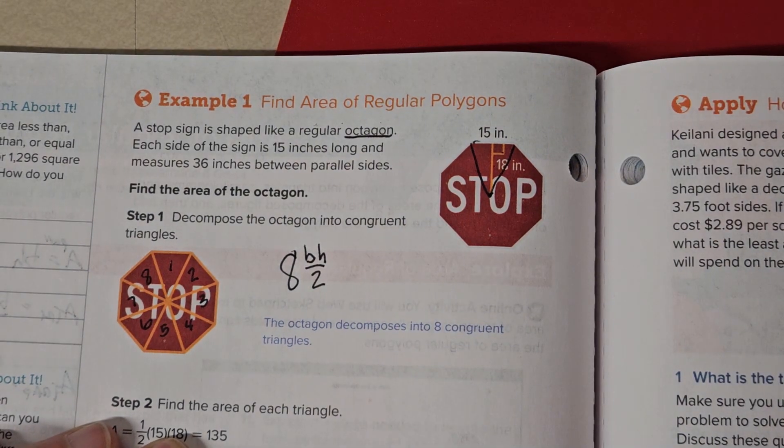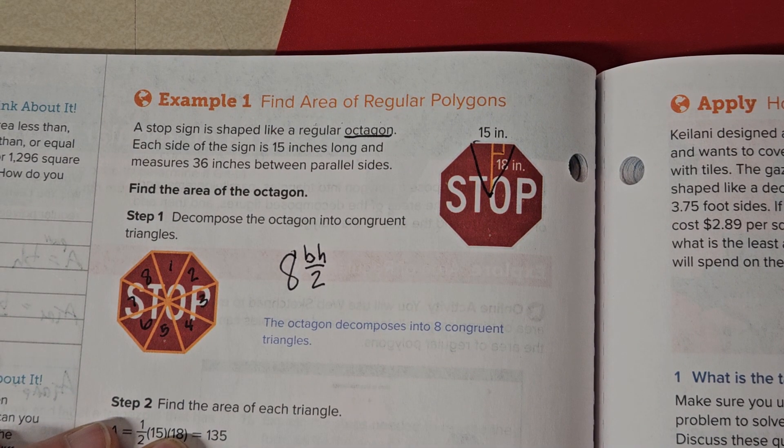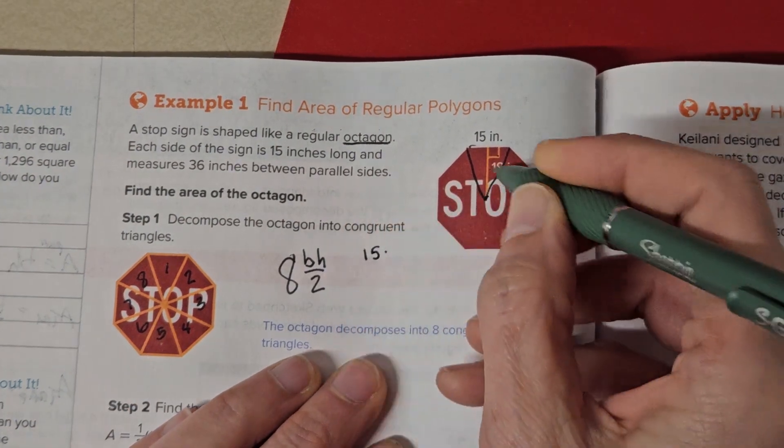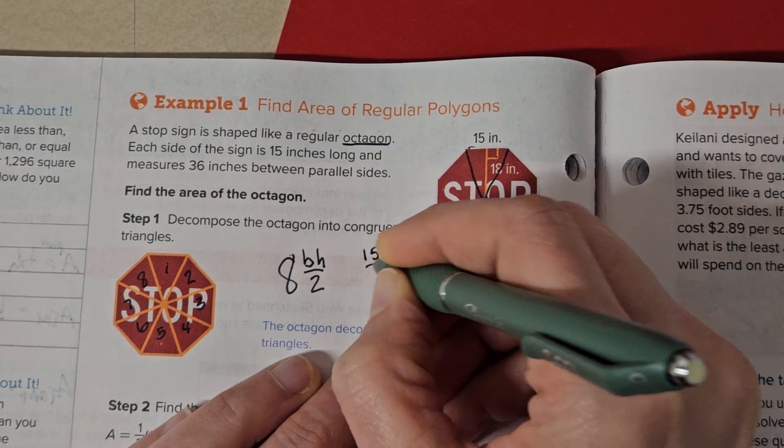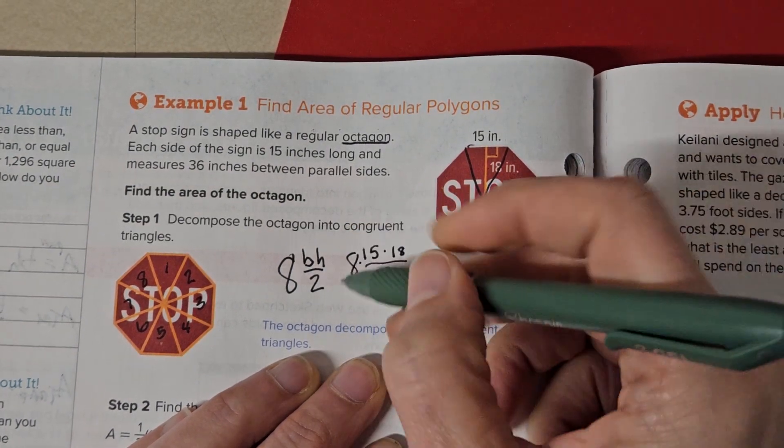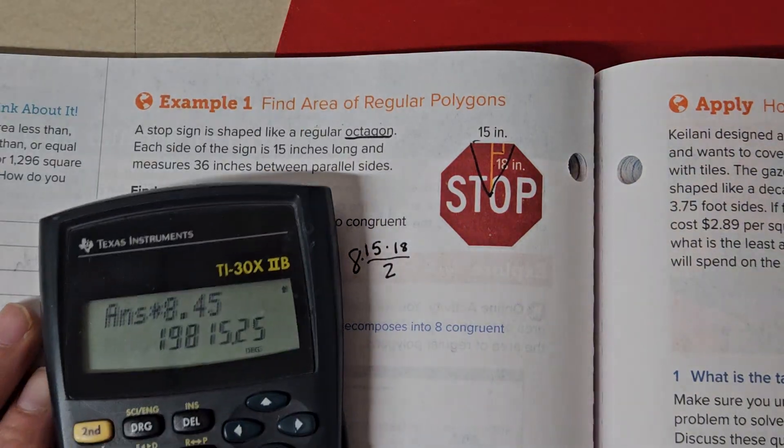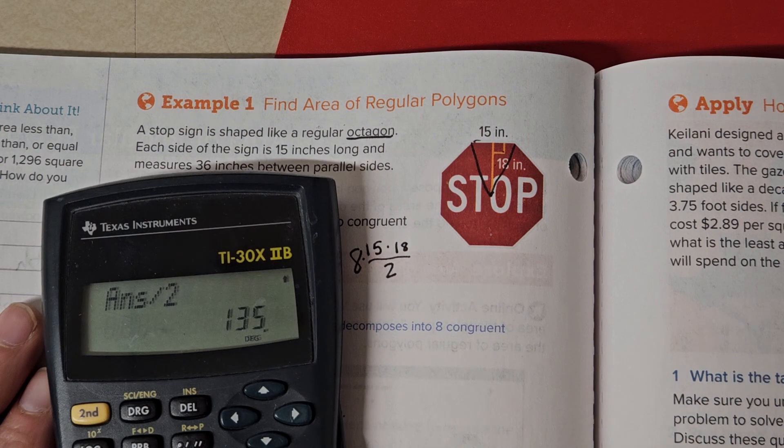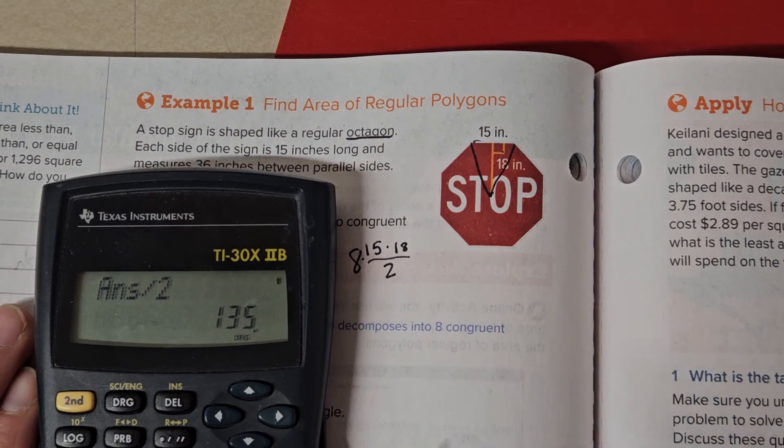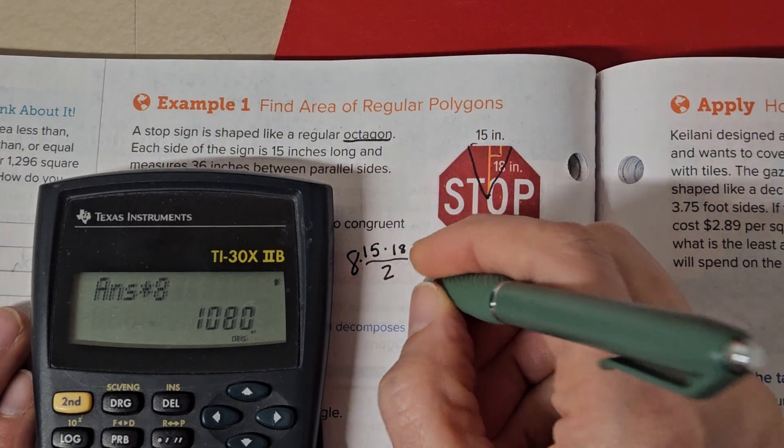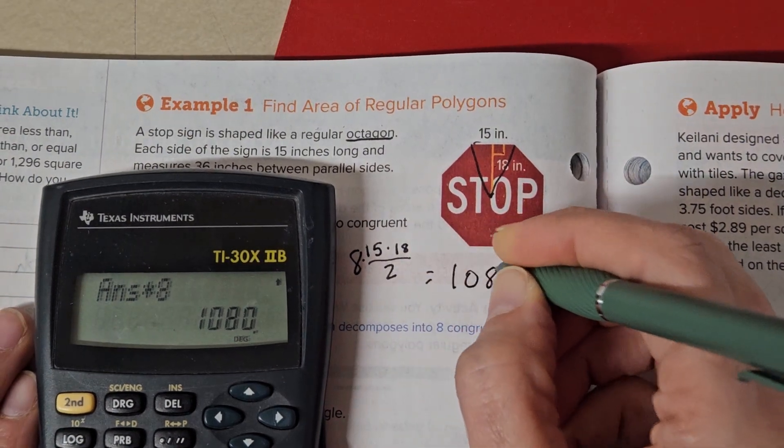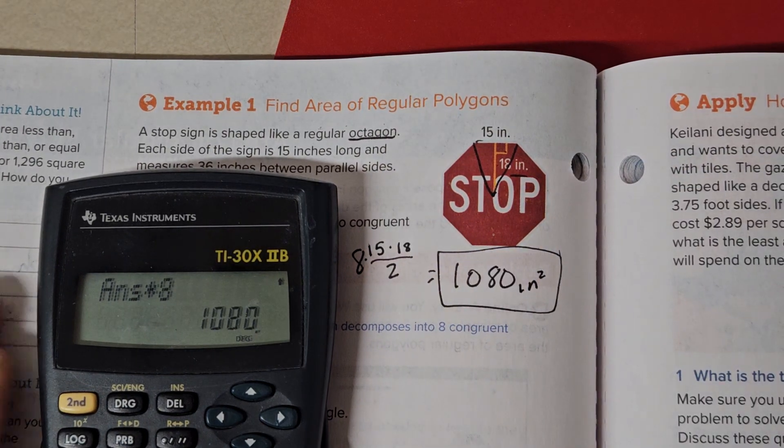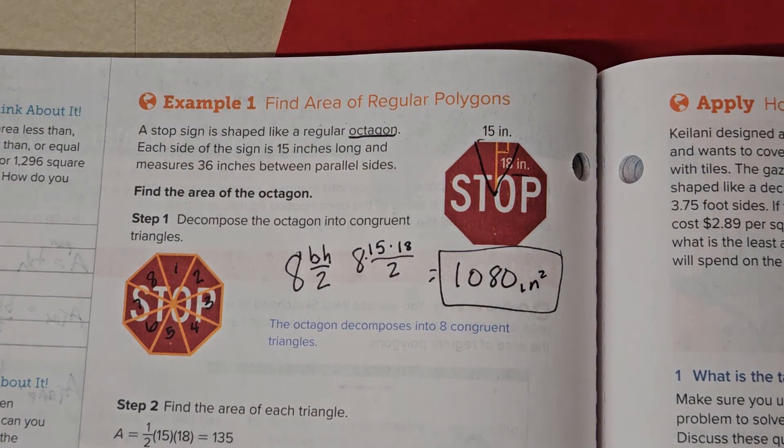Let's try it. 15 times 18 divided by 2, all times 8. Well, 15 times 18 equals 270, divided by 2 is 135, and then we have 8 of those. 1080. And we have inches, so we're inches squared. It's just that easy, you guys. You just have to be able to see the other shapes inside.